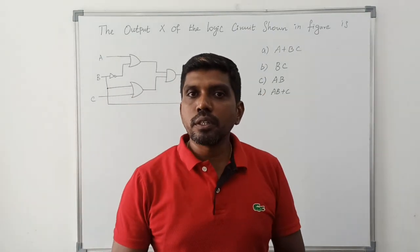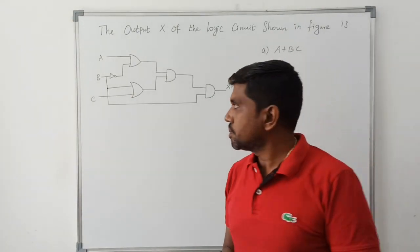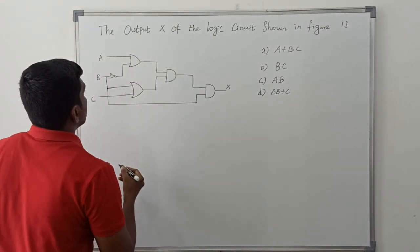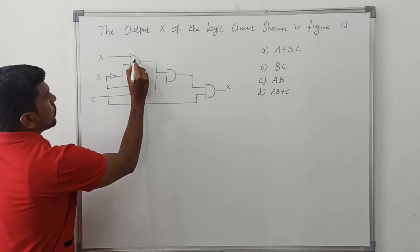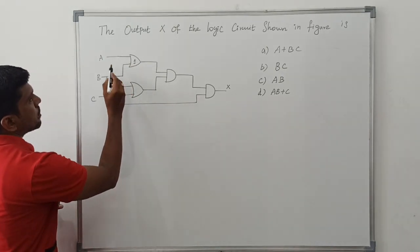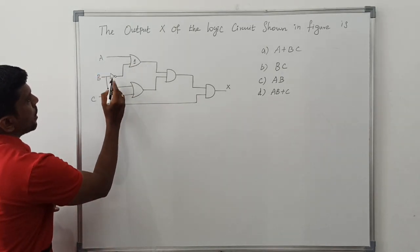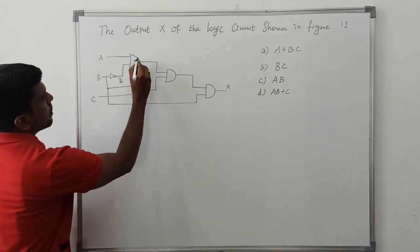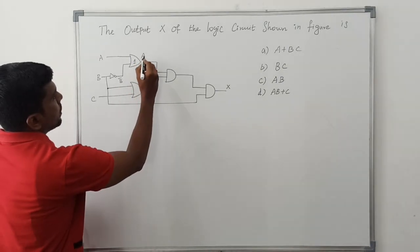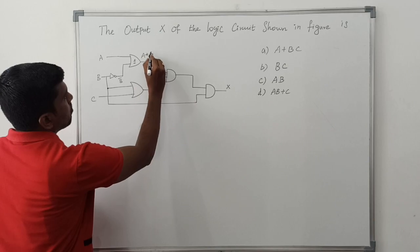So first I am taking the first OR gate. The first OR gate input is A and B bar. So the output of the first OR gate is A plus B bar.